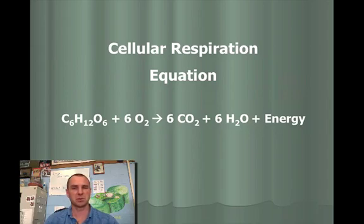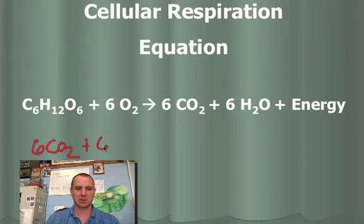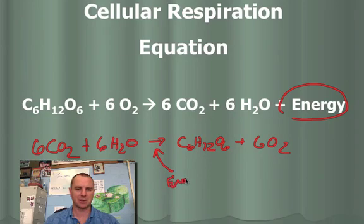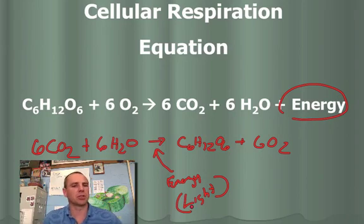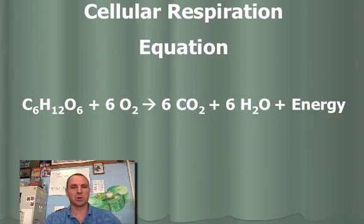The equation for cellular respiration: C6H12O6 + 6O2 → 6CO2 + 6H2O + energy. This equation should look very familiar — it's just the opposite of photosynthesis. The photosynthetic equation is 6CO2 + 6H2O → C6H12O6 + 6O2. They're the same equation reversed. In photosynthesis, we added energy as light. These equations are reversing one another: the photosynthetic equation is what plants or autotrophs do, and the cellular respiration equation is what you do.